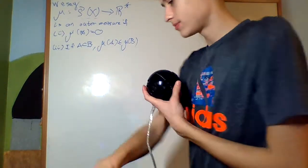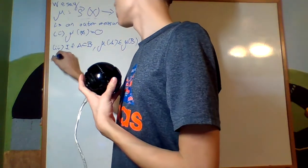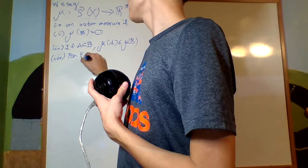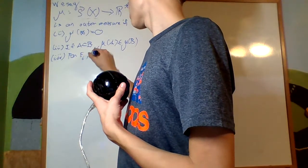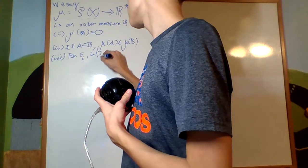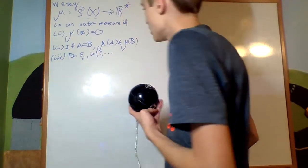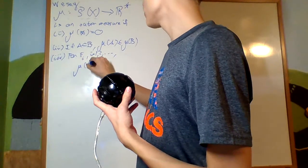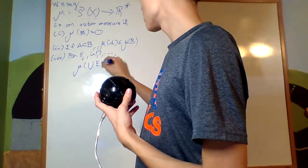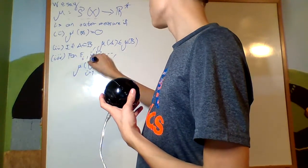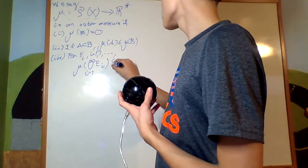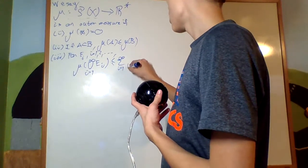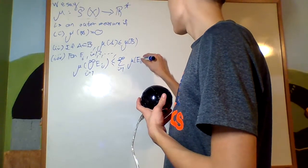Third condition. For E_i, i equals one, two, on and on, this is general, it's not disjoint, mu of the union of the E_i's from i equals one to infinity is less than or equal to the sum from i equals one to infinity of mu of E_i.